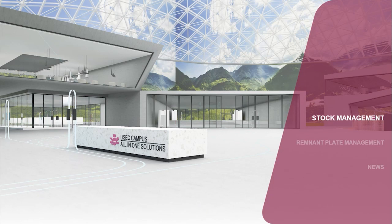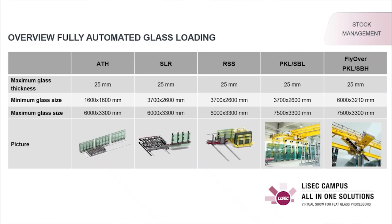Let us start with our fully automated glass loading systems — which machine fits for which application? LiSEC offers floor-bound solutions and also overhead systems with crane runways. At first, I want to show you the ATH, a compact solution for fast access. Less space is necessary and it's in general a fast solution for a low number of different glass types. The next machine would be the SLR, a side loader solution — also a very compact solution for fast access, and very fast for a low number of different glass types. In combination with a concertina rack, you can also use the solution for a higher number of different glass types.